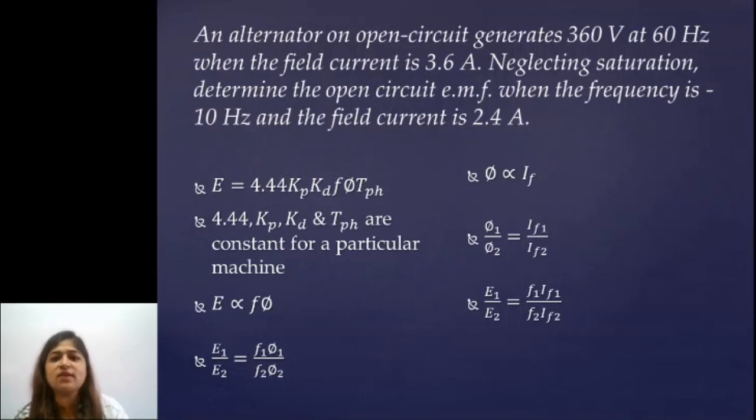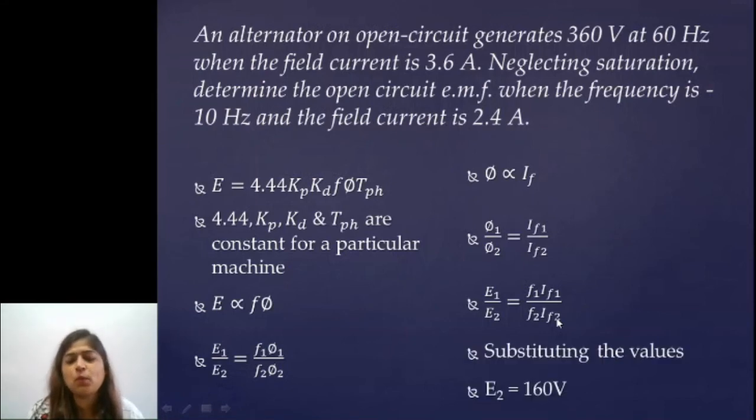Now here E1 is given as 360 volts, F1 is 60 Hz, F2 is 10 Hz, IF1 is 3.6 ampere and IF2 is 2.4 ampere. Everything is given. Just substitute the value and get the value of E2 which comes out to be 160 volts. Clear? All of you are getting this value? Great.